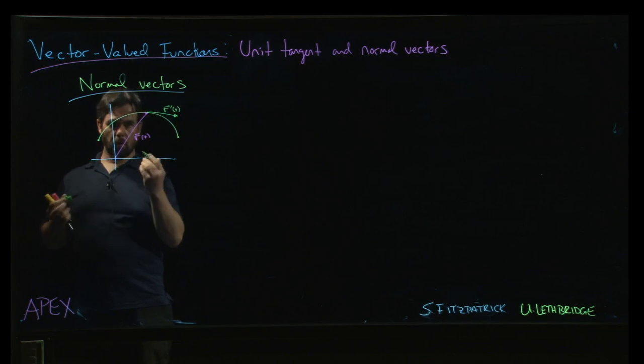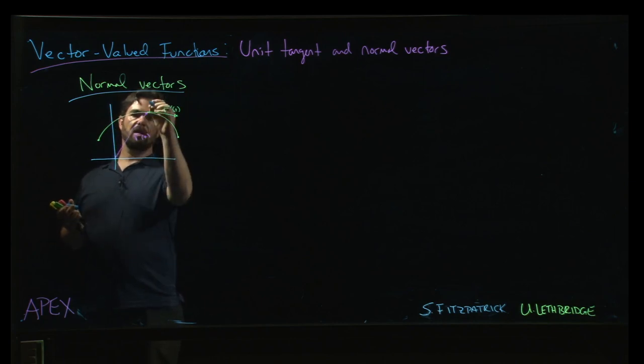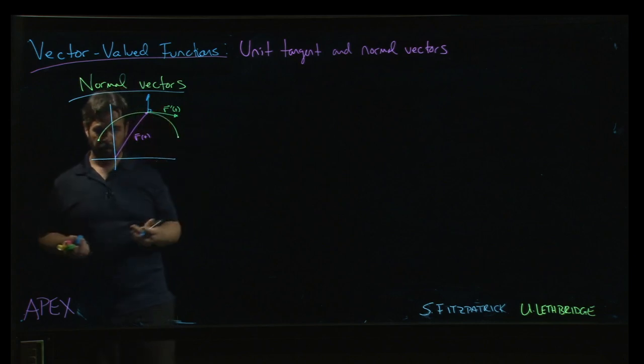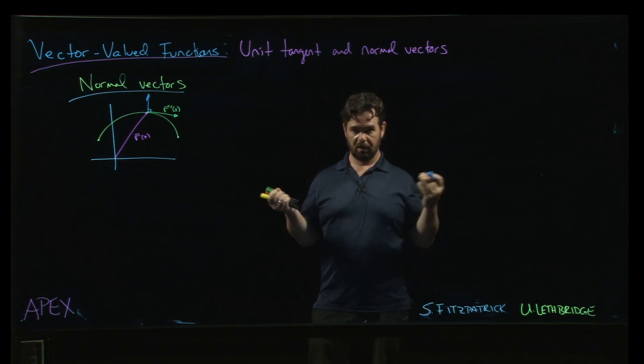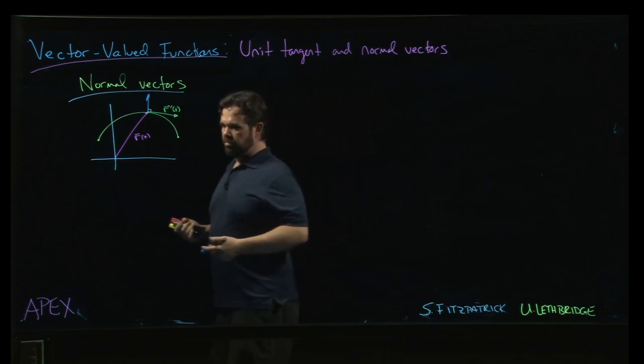We can normalize if we want to get the unit tangent vector, as we've been discussing. And then, well, there's kind of two choices for normal vector. We can kind of go that way, we could go down. The main thing is those should be orthogonal. The normal vector should be orthogonal to the tangent vector.